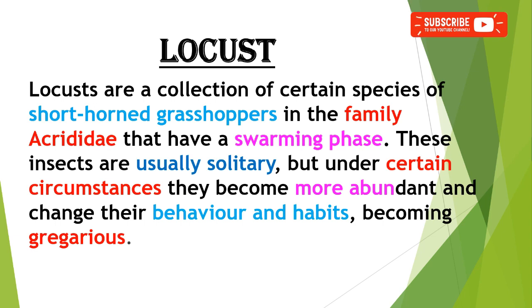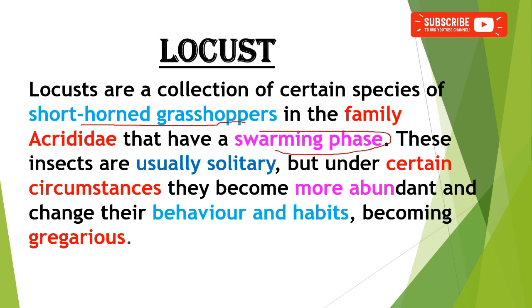Before knowing about the management of locust, what is meant by locust? Locusts are a collection of certain species of short-horned grasshoppers which mainly belong to the family Acrididae, which have a swarming phase. These insects are usually solitary but under certain circumstances they become more abundant and change their behavior and habits, then becoming a gregarious form.